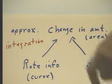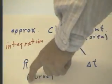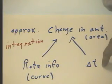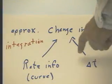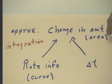In this example we have taken rate information which is represented by a curve on a rate versus time graph over a time interval, and we've obtained an approximate change in the amount which corresponds to the area under the curve.